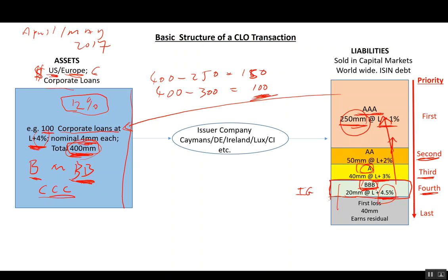Finally, there is the first loss, or last-pay, piece — the last priority to raise the remaining 40 million dollars. This stands last in the queue. Let's think about how this whole structure gets sold and how the notes find their way into the market.